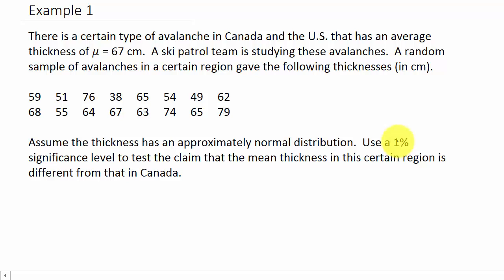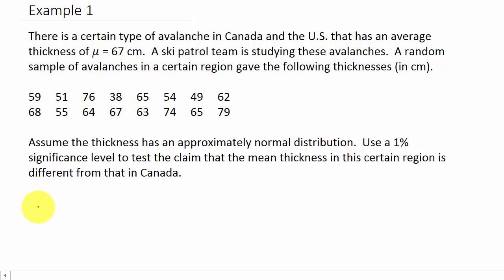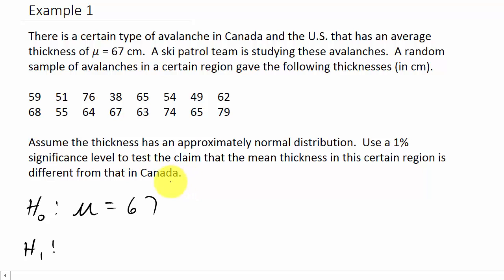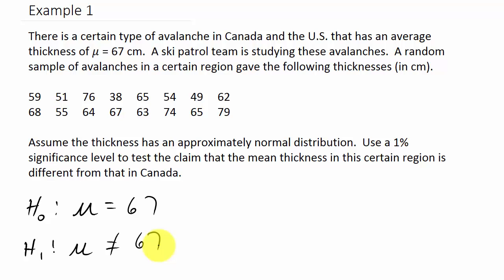First, we state the null and alternate hypotheses. The null hypothesis H₀ is that the population mean thickness is 67 centimeters: μ = 67. The alternate hypothesis H₁ is that the mean thickness in this certain region is different from that in Canada: μ ≠ 67. We're not saying it's less than or greater than 67 — just that it's different.